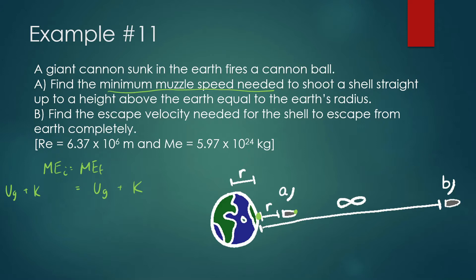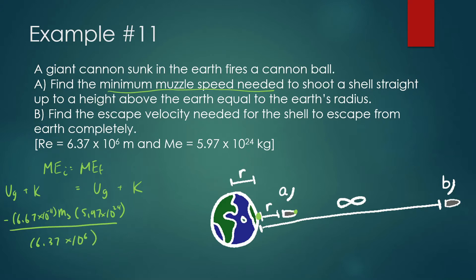We should think about all of the potential energy at the beginning, all of the kinetic energy at the beginning, and set it equal to all of the potential energy at the end, as well as all of the kinetic energy at the end. At the very beginning, we have gravitational potential energy: negative 6.67 × 10⁻¹¹ times the mass of the shell times the mass of Earth (5.97 × 10²⁴), divided by the radius of the Earth (6.37 × 10⁶), plus one-half mass of the shell times velocity squared — that's what we're looking for.